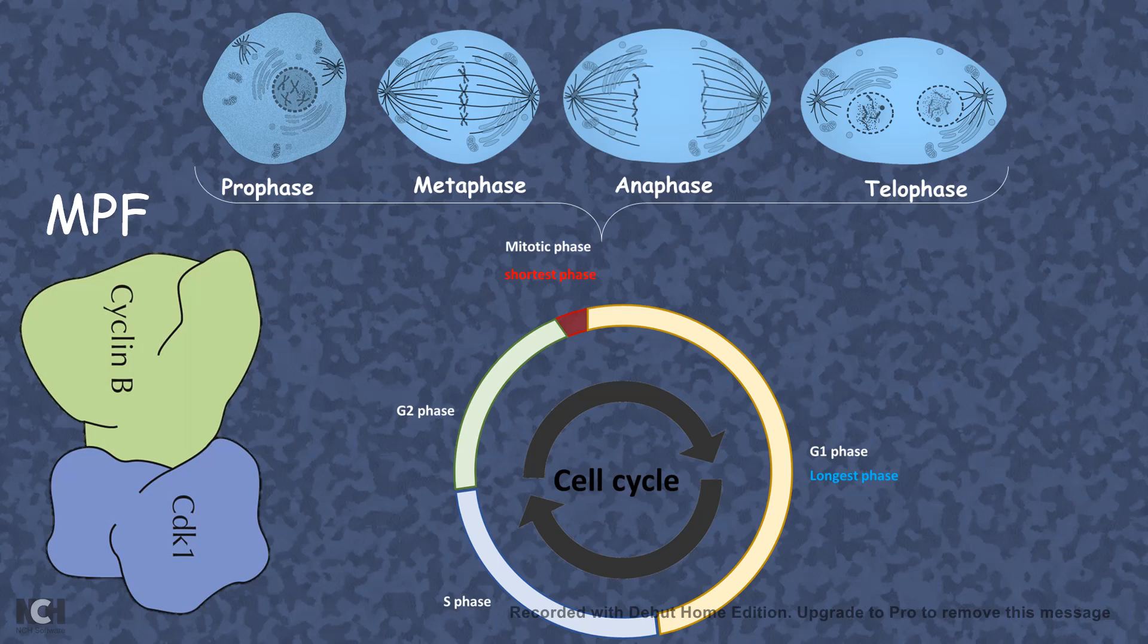Cyclin B is especially important at the mitotic phase of the cell division. And its expression level or its concentration also increases at that particular point of time.